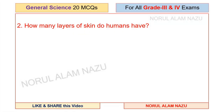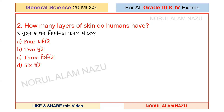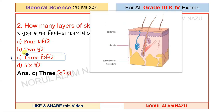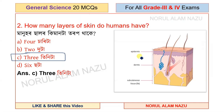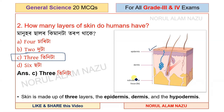Second question: How many layers of skin do humans have? The skin is made up of three layers: the epidermis, dermis, and subcutaneous layer, also known as the hypodermis.